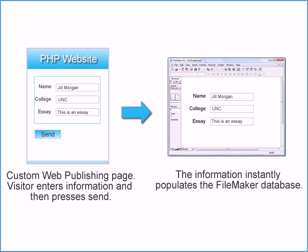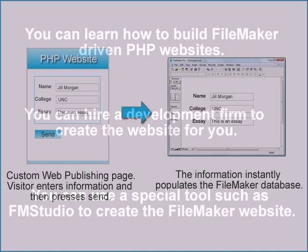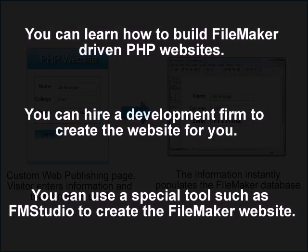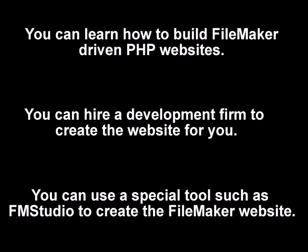If you edit a record on the web and press submit, the information is instantly updated in the database, so information is always current. If you create a new record on the web, a new record is automatically created in the database. Not only can you see the new record in FileMaker, but also on the web. In order to create a custom web publishing solution, you have a few options listed here.